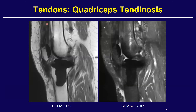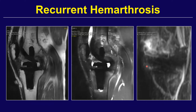Quadriceps tendon and patellar tendon assessment is also well done with MRI — here the tendons look tendinotic but not yet torn, though probably not of ideal quality. Here's an interesting case of recurrent hemarthrosis: some patients with well-functioning arthroplasty implants develop recurring hemorrhagic joint effusions because the synovium gets caught between the implant components and develops brittle areas. Dynamic contrast enhancement can locate these hotspots, providing a roadmap for the interventional radiologist for selective embolization.